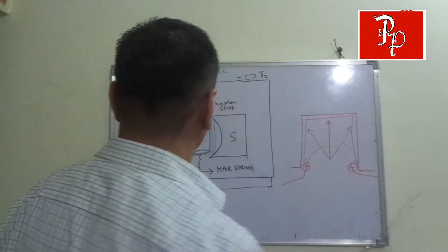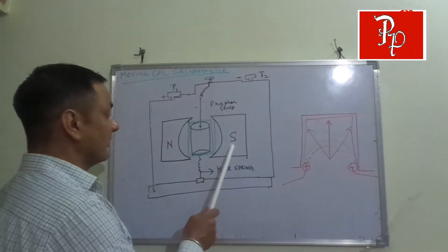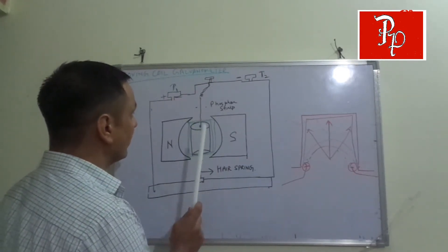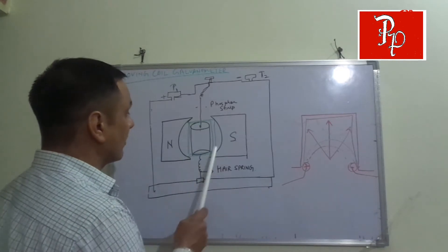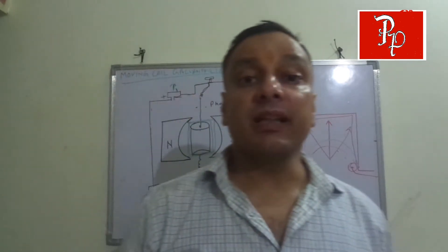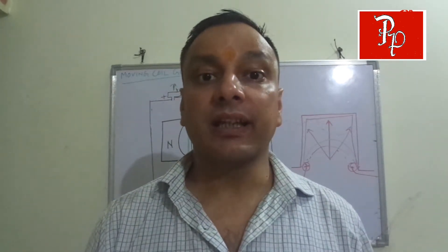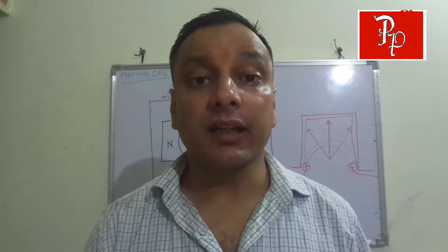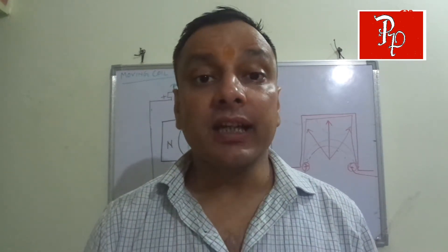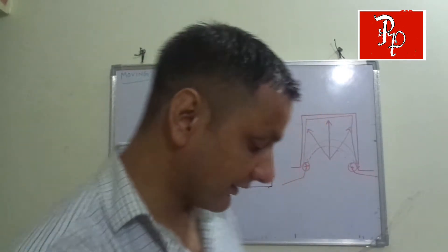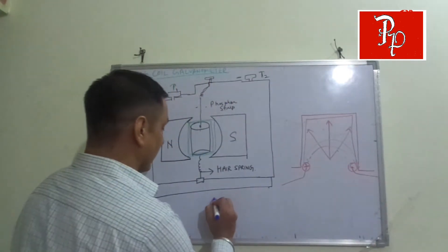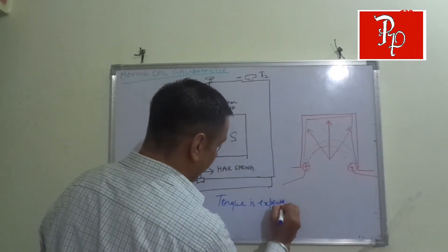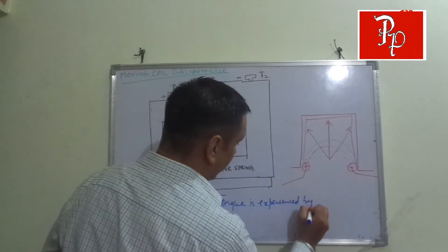Moving Coil Galvanometer construction. Here you can see two U-shaped horseshoe magnets, a soft iron core, and a rectangular coil. We know that whenever we place a current-carrying coil in a magnetic field, it will experience a torque — a turning action.